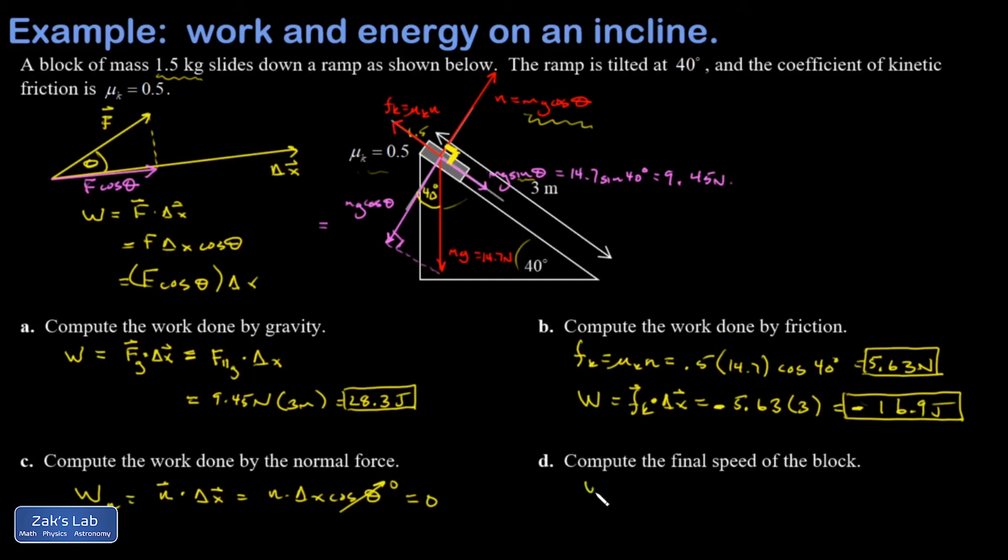Compute the final speed of the block. So I'm going to look at the work energy theorem and go net force, I mean net work, it's a change in kinetic energy. And again, we started at rest. I think I forgot to say at rest, but when I forget it, you can assume that's what I meant. So my initial kinetic energy is zero. And my net work in this case involves two different forces.